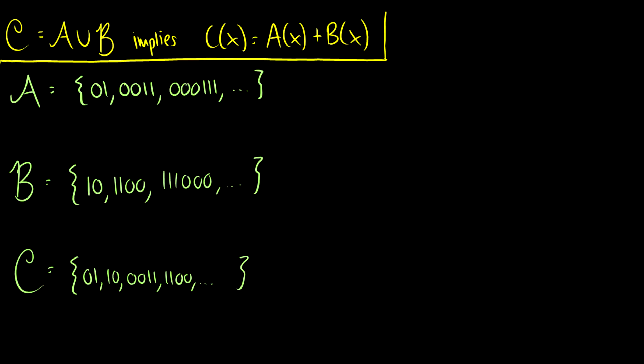For example, in A, we want at least one 0 followed by the same amount of 1s. So if we have one 0, then we need to have one 1, which is one object of length 2. One object of length 4, and this goes on and on. We can see this is the same thing as x² times 1 plus x² plus x⁴ and so forth, so this is just the generating function x² over 1 minus x².